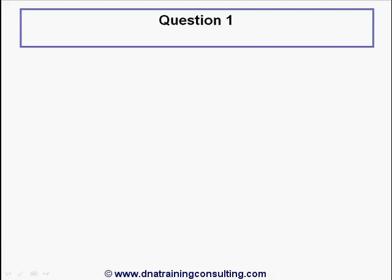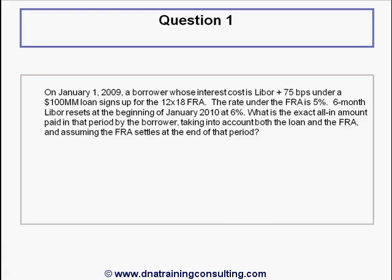Question 1. On January 1st, 2009, a borrower whose interest cost is LIBOR plus 75 basis points under a $100 million loan signs up for the 12-by-18 FRA. The rate under the FRA is 5%. Six-month LIBOR resets at the beginning of January 2010 at 6%. What is the exact all-in amount paid in that period by the borrower, taking into account both the loan and the FRA, assuming the FRA settles at the end of that period?